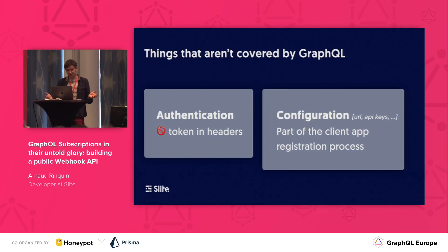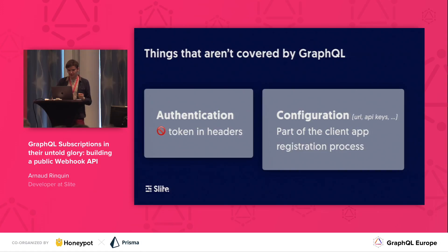Authentication is something not specified in GraphQL, which is fine. We have tokens set as headers and we just check them right away, then we don't care about them in the resolution. Configuration for the client application — like the URL for the endpoint or API keys — that's not part of GraphQL. That should be part of your client application registration process. That makes it simpler.